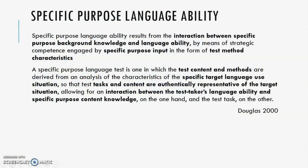Regarding Specific Purpose Language Ability, back in 2000 in his book, Douglas discussed specific purpose language ability, which results from the interaction between specific purpose background knowledge and language ability by means of strategic competence, engaged by specific purpose input in the form of test method characteristics. He also defined a specific purpose language test as one in which the test content and methods are derived from an analysis of the characteristics of the specific target language use situation, so that test tasks and content are authentically representative of the target situation, allowing for an interaction between the test taker's language ability and specific purpose content knowledge and the test task. The highlighted parts of these definitions are the problematic ones.